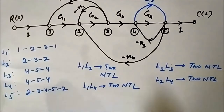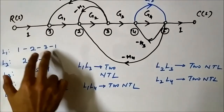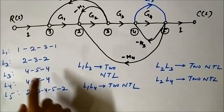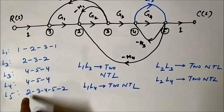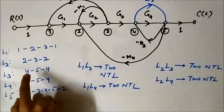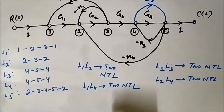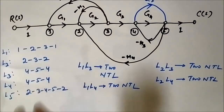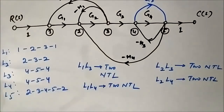Now comparing L5 (2,3,4,5,2) with each remaining loop: L5 and L1 share nodes 2 and 3 — touching. L5 and L2 share nodes 2 and 3 — touching. L5 and L3 share nodes 4 and 5 — touching. L5 and L4 share nodes 4 and 5 — they are also touching.